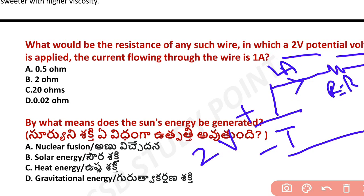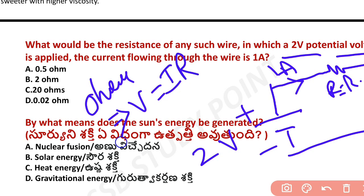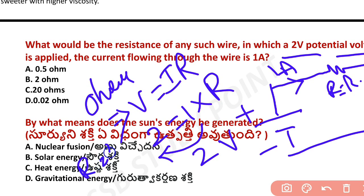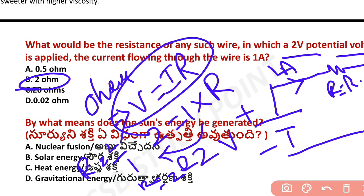According to Ohm's Law, V equals I into R. Voltage equals the product of current and resistance. Voltage is 2 volts, current is 1 ampere, so R equals 2 divided by 1, which equals 2 ohms. Option B, 2 ohms, is the correct answer.